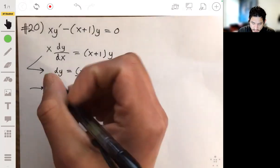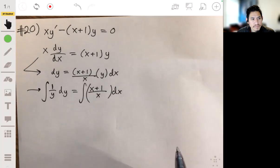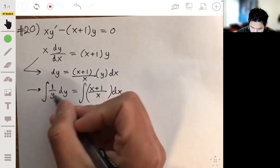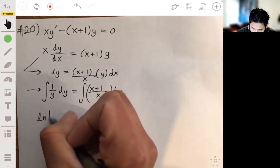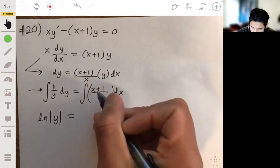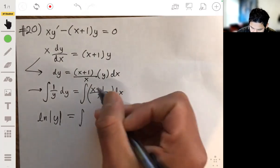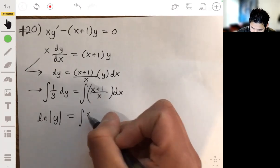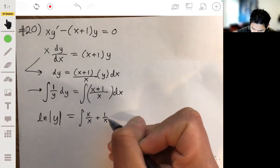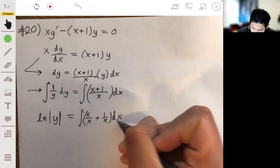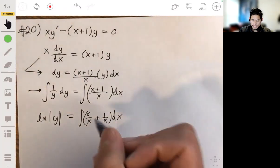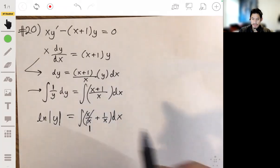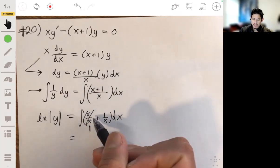All right, so now we can set up our integrals. And this left side will simply be the natural log of the absolute value of y. This will, let's break this up as x over x plus 1 over x dx. Because x over x is just 1, so then this is a lot easier to integrate.